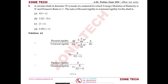Flexural rigidity = EI and torsional rigidity = GJ. In this ratio, I is moment of inertia and J is polar moment of inertia. The ratio EI/GJ simplifies to E/2G. Using the relation G = E / [2(1+μ)], substituting gives the ratio = (1+μ). Answer: C.